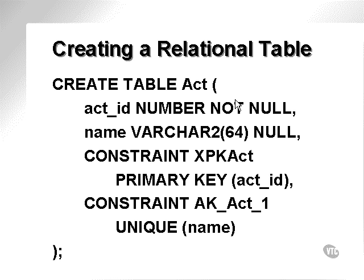Here's an example of a relational table creation. I'm creating the ACT table in the CONCEPT schema with two columns. The first is a number type that's not nullable. The second is a name which is not nullable. The last four lines are constraint definitions. We'll cover constraints later on.